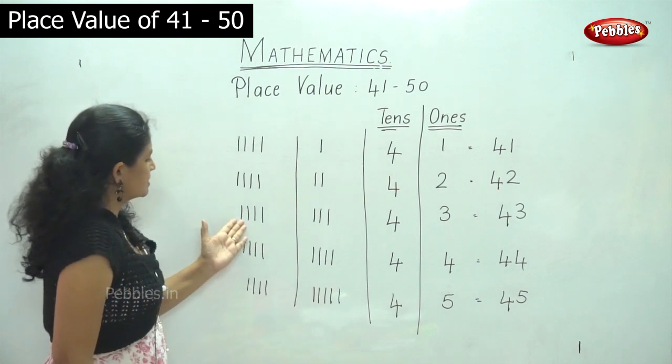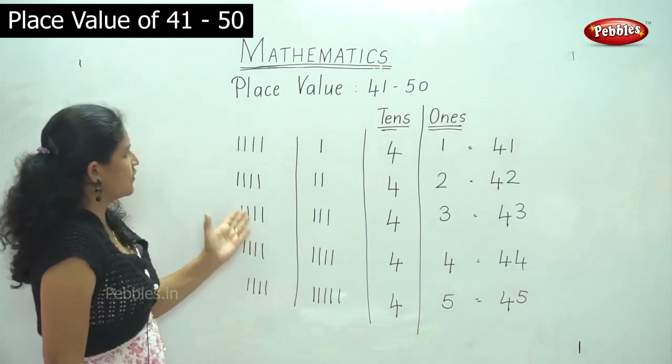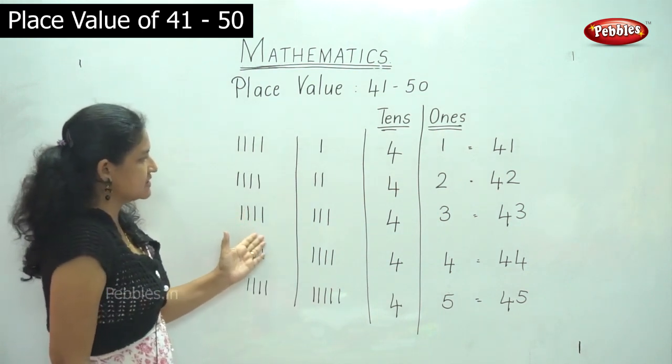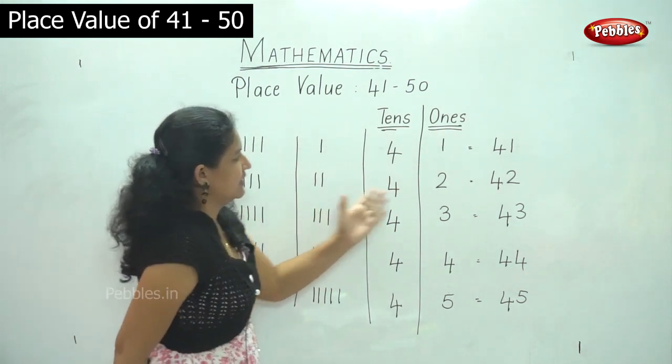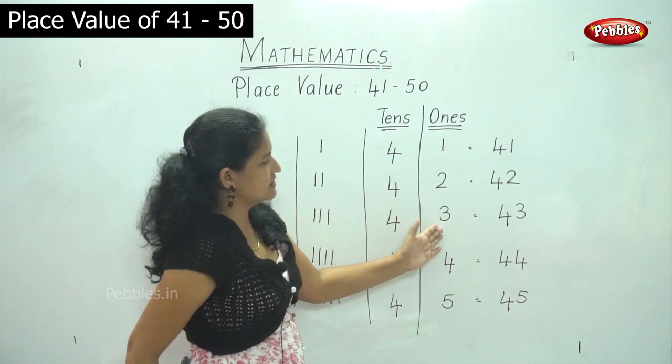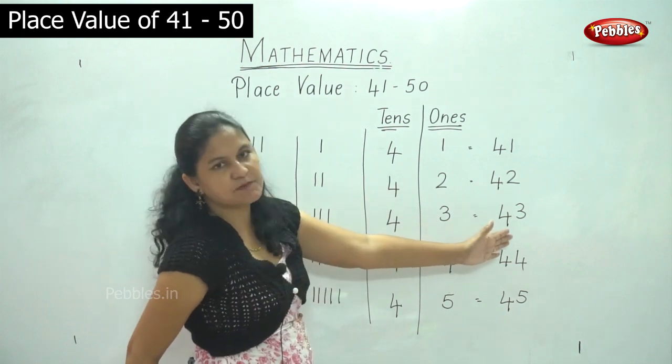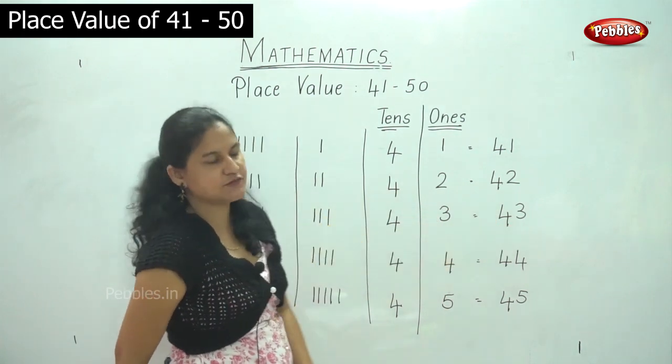Next I have 1, 2, 3, 4 — 4 tens — and 1, 2, 3 — 3 ones. That gives the number 43.